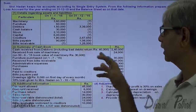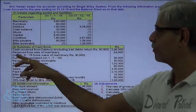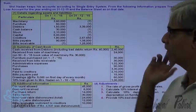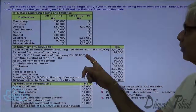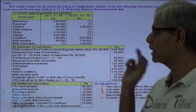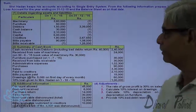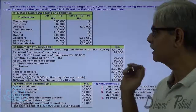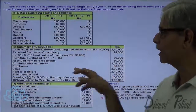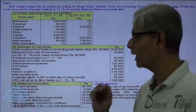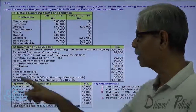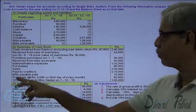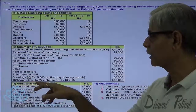Received from sale of machinery is Rs. 24,000. On 30th June 2015, the book value of the machinery was Rs. 30,000. Furniture was purchased on 1st July 2015. Received from bills receivable. Administrative expenses, purchases, sales, paid to creditors, bills payable paid, drawings at Rs. 5,000 on the first day of every month, and a 10% loan given to Mrs. Nathan on 1-10-2015.